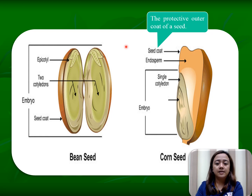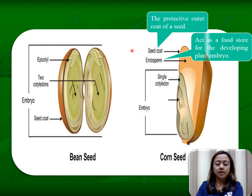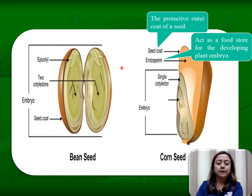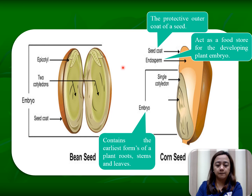Seed coat: the protective outer coat of a seed — so this one is the seed coat. Next, endosperm, which acts as a food store for the developing plant embryo. Next part, we have the embryo, which contains the earliest forms of plant roots, stems, and leaves.